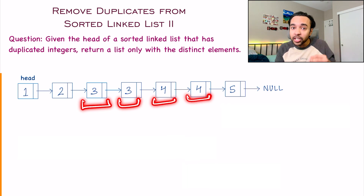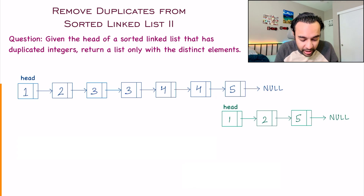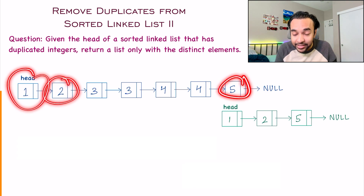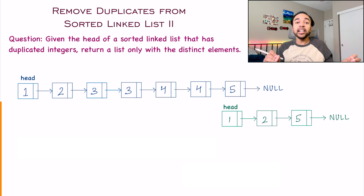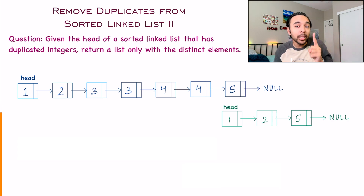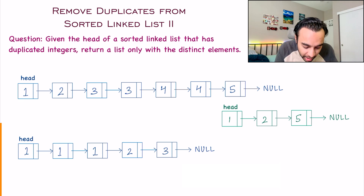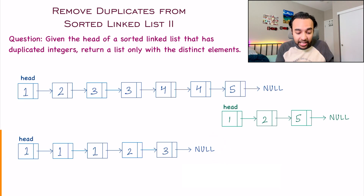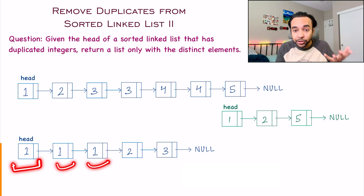So your resultant list will look something like this. Notice that it only has the distinct elements and the numbers that were duplicated have been removed altogether — you don't even have to keep a single instance of them. Similarly, for the next test case, you see that the number one has been repeated three times.